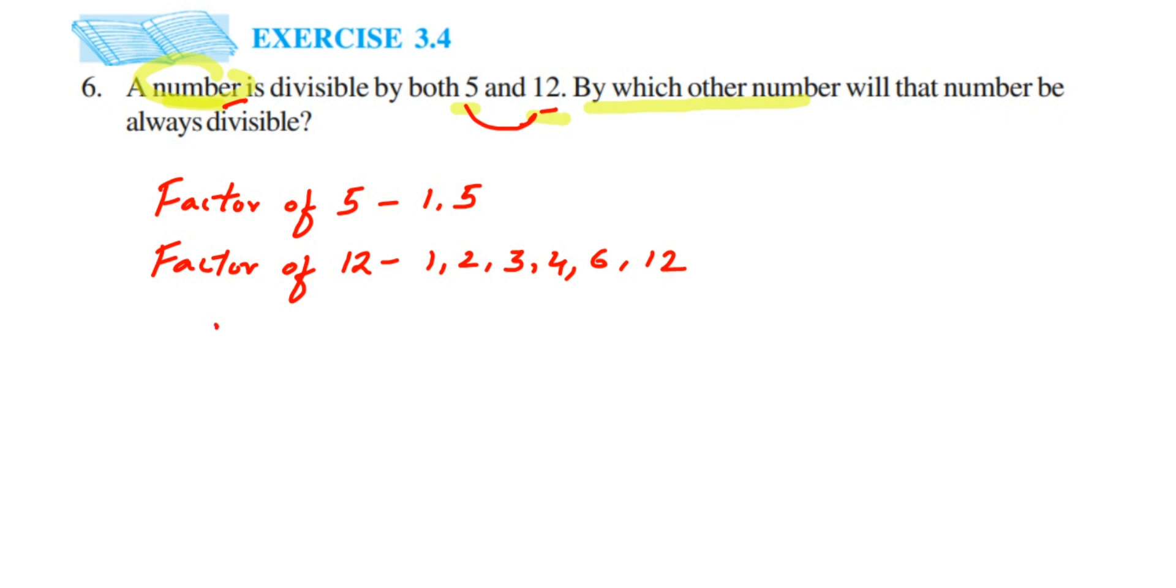Now the common factor, let us check. So common factors, if you see, there is only one number, that is 1, which is common. All other numbers are not a common factor. So if the common factor is 1, this means that 5 and 12 are co-prime numbers.